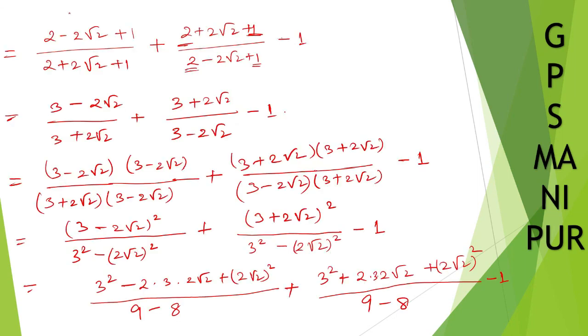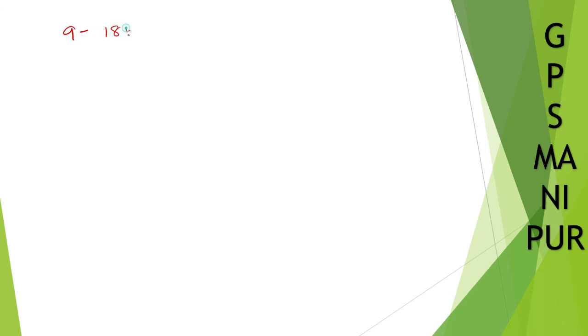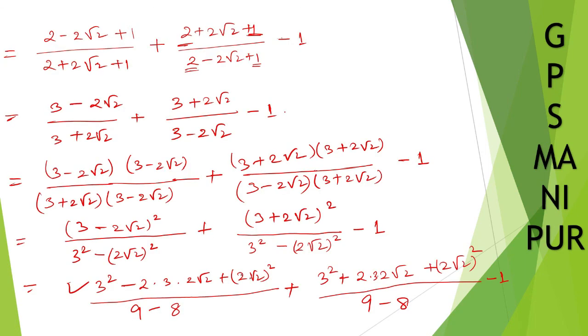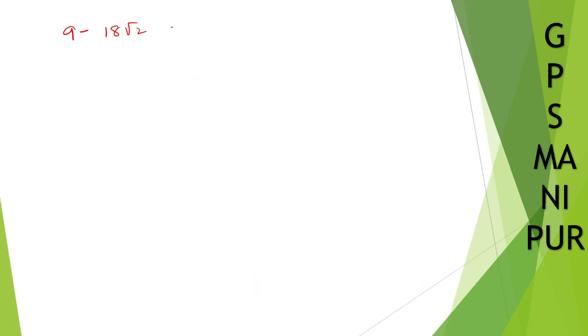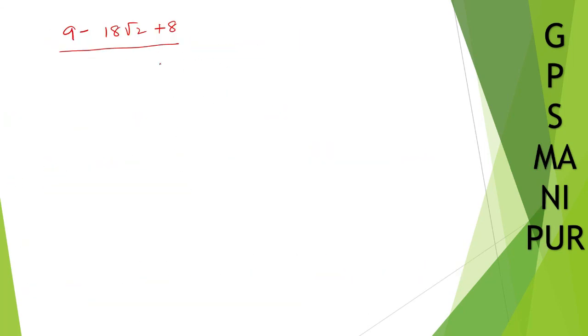Computing: 3 squared is 9. For the first numerator: 9 minus 2 times 3 times 2√2 — that is 12√2 — plus (2√2) squared which is 8. So 9 minus 12√2 plus 8. Denominator is 1, so no need to write it.